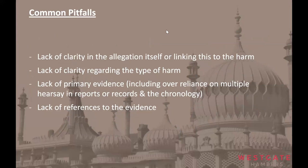Common pitfalls include lack of clarity in the allegation itself, failure to link the allegation to the harm, and failure to specify the type of harm. To avoid this, particularly regarding type of harm — whether it's emotional, psychological, or both — consider whether anything can be gleaned from the presentation of the child, or whether the child actually exhibits any effect of the harm suffered. That can feed into careful, considered drafting with specific allegations and specific types of harm tied together.